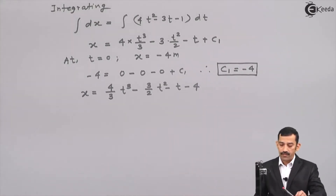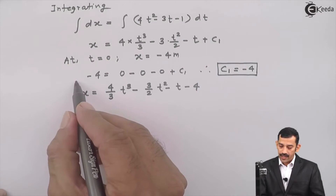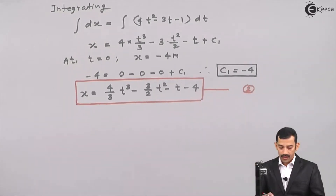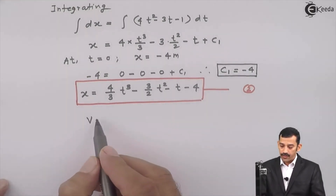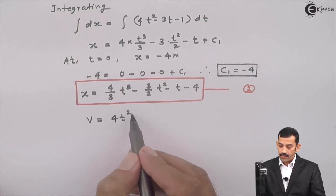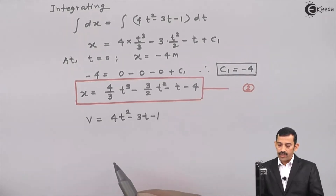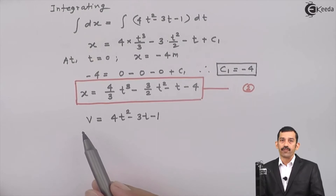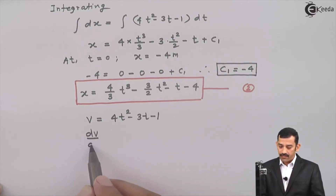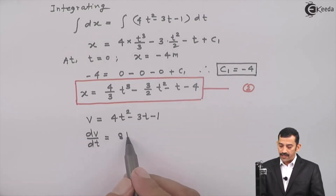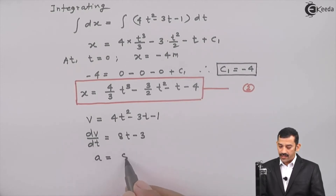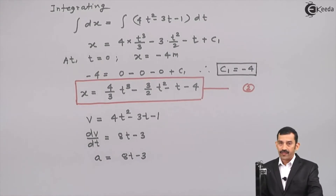This equation of x in terms of time t is equation number 2. As the velocity equation is known — v equal to 4t squared minus 3t minus 1 — if we differentiate with respect to time t, we get the equation of acceleration, because dv by dt is acceleration. Differentiating: dv by dt equals 8t minus 3. This is equation number 3.